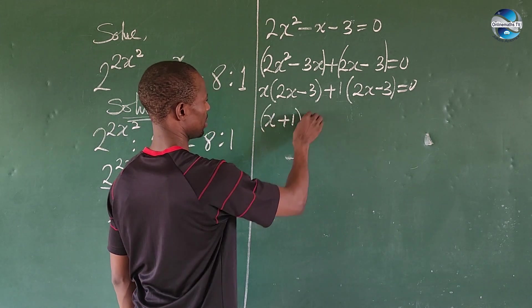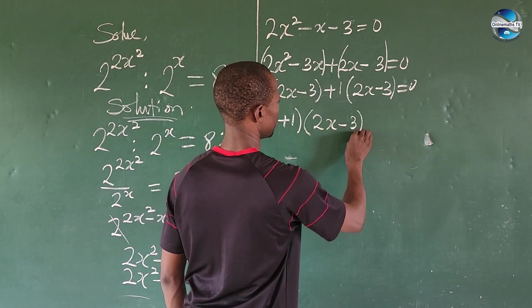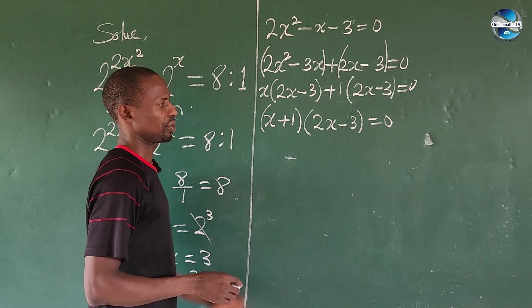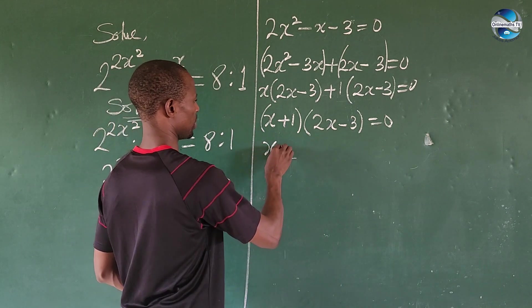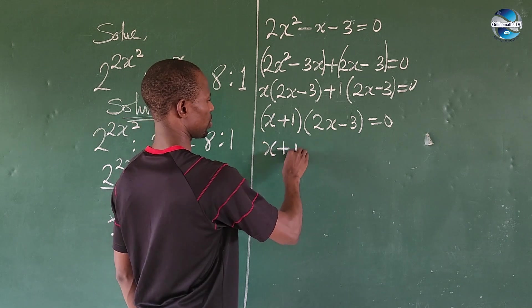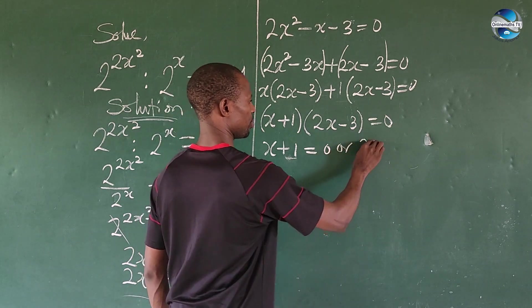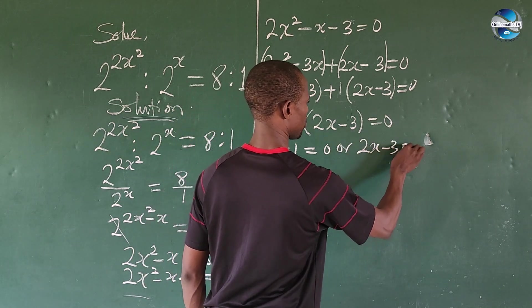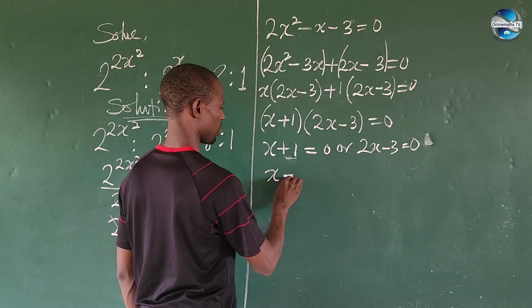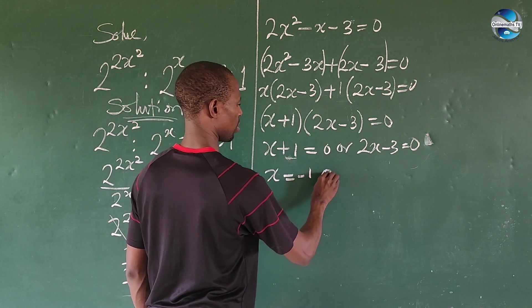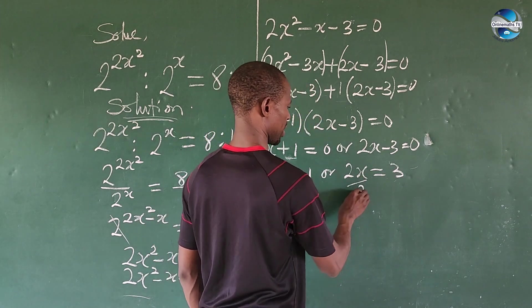We apply the zero product rule. This gives us x + 1 = 0 or 2x - 3 = 0. So x = -1, or 2x = 3, which after dividing by 2 gives x = 3/2.